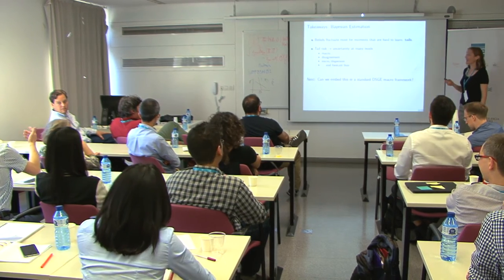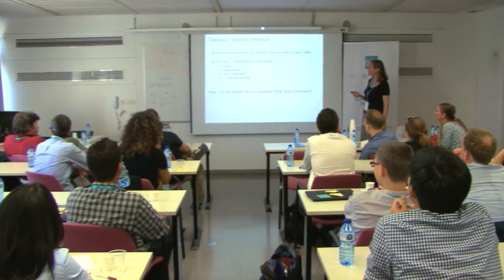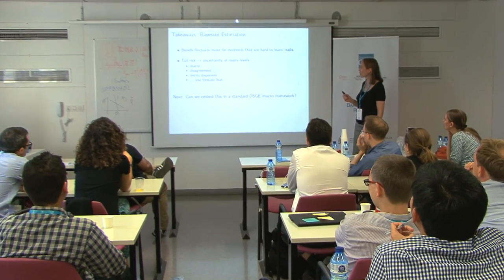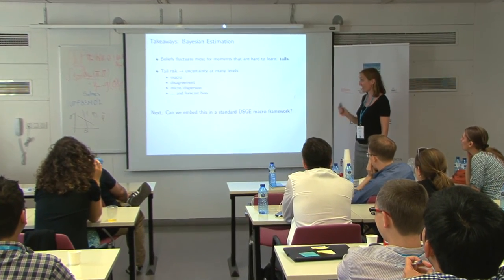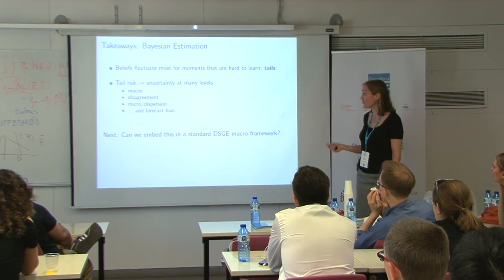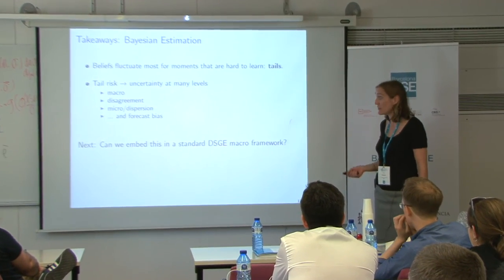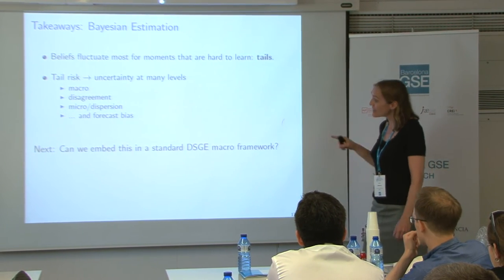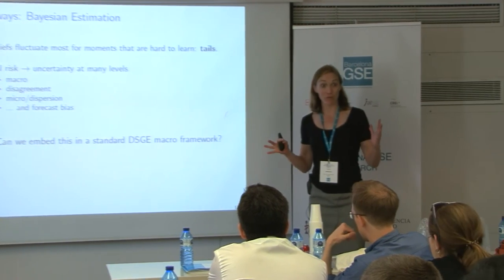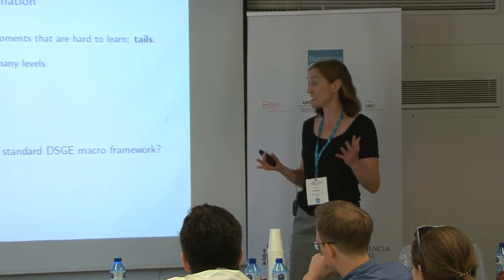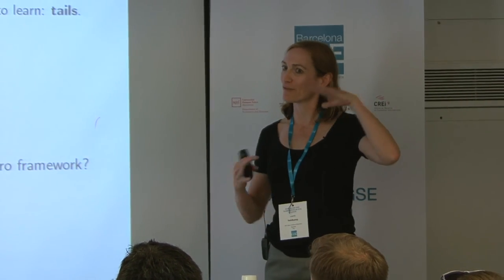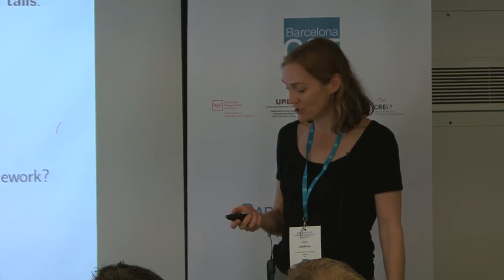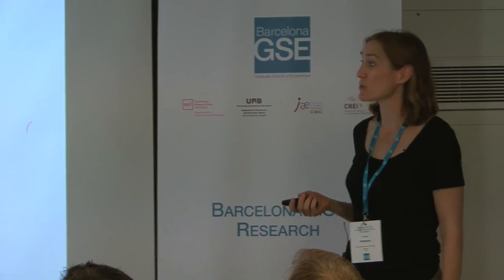That's Bayesian estimation. Beliefs fluctuate most for moments that are hard to learn — in particular, tails. Tail risk generates uncertainty at many levels: macro uncertainty, disagreement, micro dispersion, forecast bias — all of these things are linked in this model. The next thing I want to ask is: can we embed this in a standard DSGE framework? The simplest way to do this is to step away from Bayesian estimation and do non-parametric classical estimation.